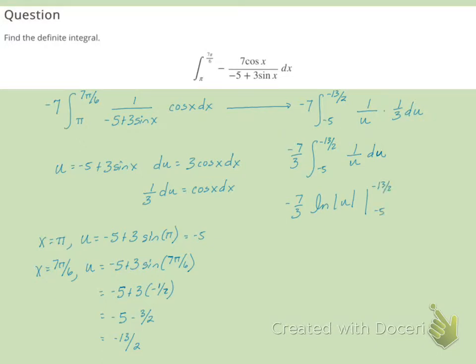So we'll have negative 7 thirds times the natural log of the absolute value of negative 13 halves minus the natural log of the absolute value of negative 5.